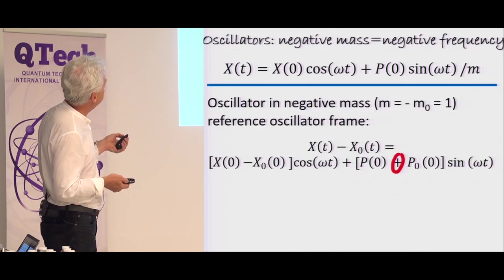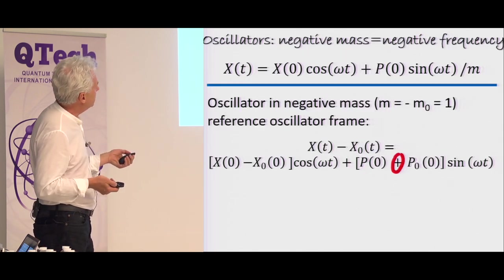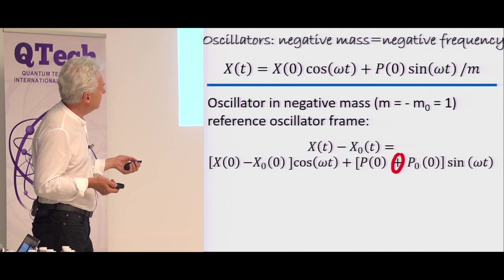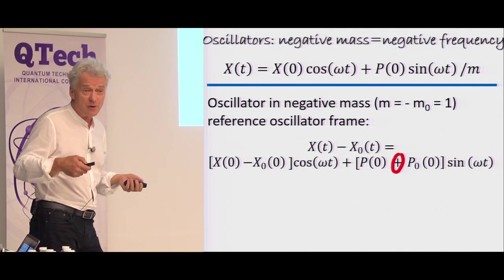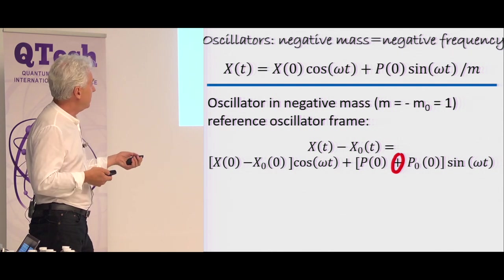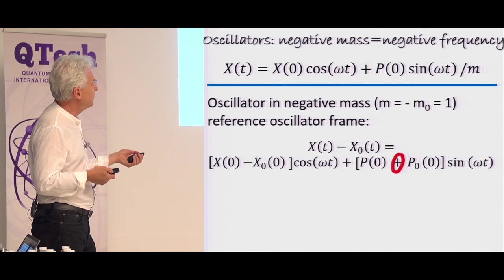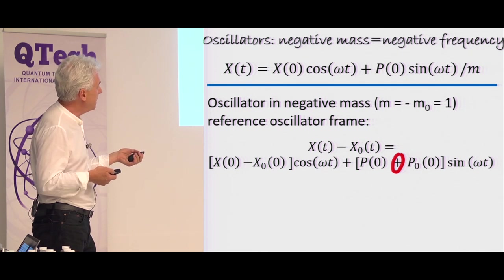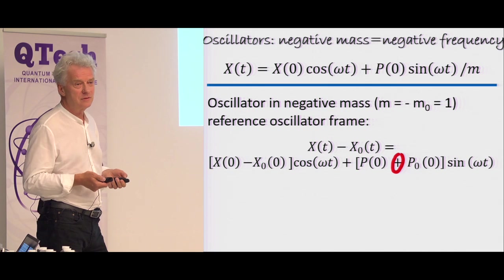And the same story goes for an oscillator. And for an oscillator, you can also think about it not as a negative mass, but a negative frequency. Because you have a sign here. And if the frequency of my reference frame is effectively negative, then this minus will be changed into a plus. And again, life is good.